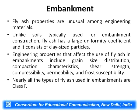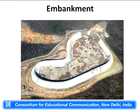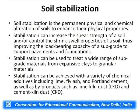Fly ash can add to concrete's final strength and increases its chemical resistance and durability, and can also significantly improve the workability of concrete. Apart from that, fly ash has uses in embankments. Fly ash properties are unique among engineering materials, unlike typical soil used for embankment construction. Fly ash has a large uniformity coefficient and consists of clay-sized particles. Engineering properties that affect its use in embankments include grain size distribution, compaction characteristics, shear strength, compressibility, permeability, and frost susceptibility. Normally all fly ash used in embankments is Class F — this is a picture of an embankment completely made up of fly ash.